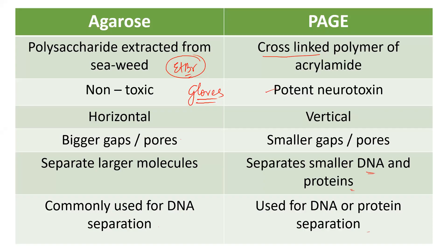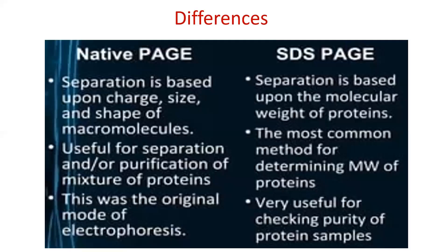In polyacrylamide gel electrophoresis there are two types: native and SDS. In native gel, you always retain the native conformation — the original conformation of your protein sample. You do not change it. Separation is based on charge, size, and shape of the macromolecules. That's why it is called native. When you do SDS PAGE, the separation is based on the molecular weight of proteins; the charge is nullified.